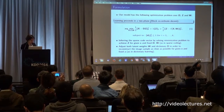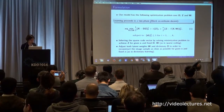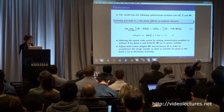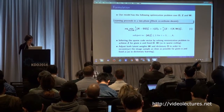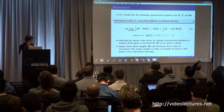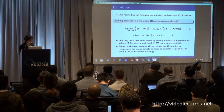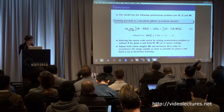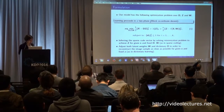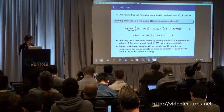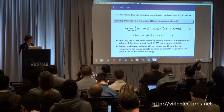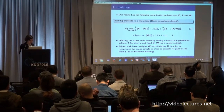Here you can see the main formulation of this work. We have an optimization problem with two phases. In the first phase, we have to infer the sparse code vector. In the second phase, we have to adjust both the weights and the dictionary. The formula shows an optimization problem over the dictionary D, the code vector Z, and the weight W.